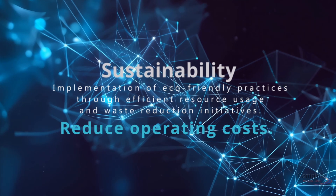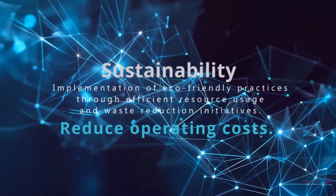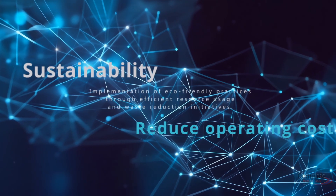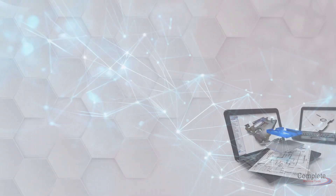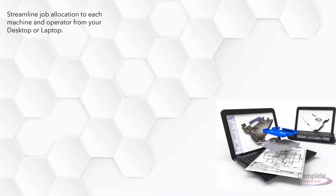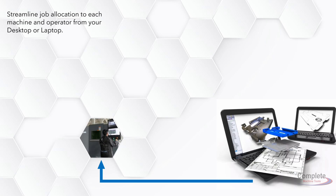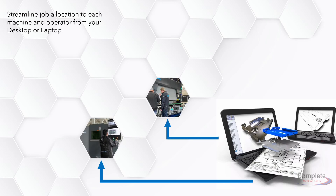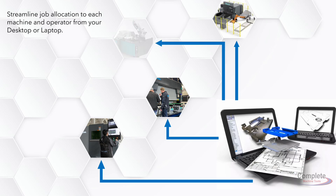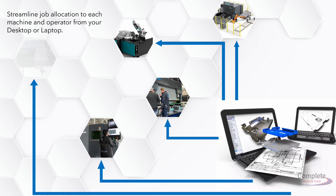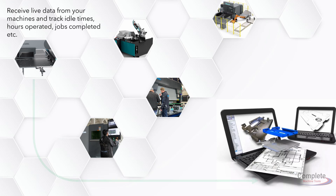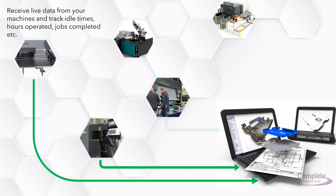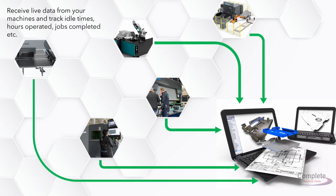Sustainability: implementation of eco-friendly practices through efficient resource usage and waste reduction management initiatives. Manage your workshop or factory from anywhere in the world from your laptop or desktop computer. Deliver job lists and update product and tooling databases directly to your machines and operators. You can even receive real-time data and feedback on machine idle times, production efficiency, maintenance diagnostic information, and more.